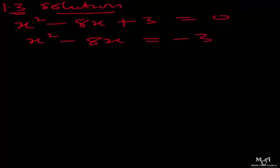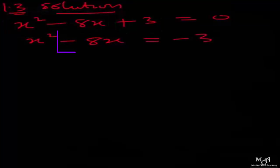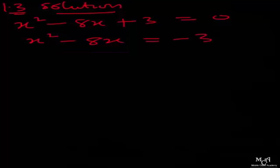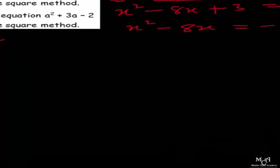In a quadratic equation we have three parameters: the coefficient of x squared, the variable, and the constant. Here, minus 8 is the coefficient of x. What you do is pick that coefficient: minus 8 divided by 2 gives you minus 4. Square the result — that gives minus 4 squared — and add it to both the left-hand side and the right-hand side.